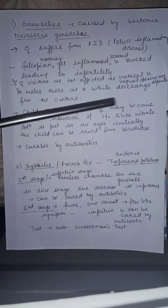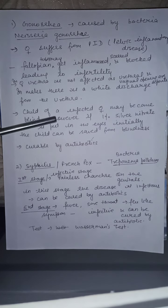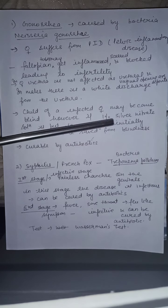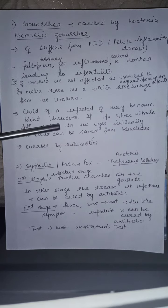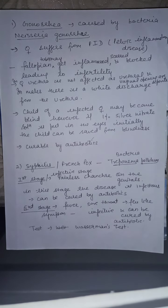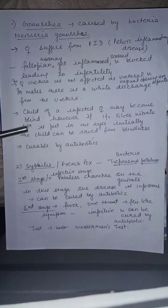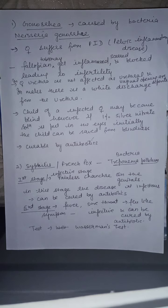A child of an infected female may become blind; however, if a 1% silver nitrate solution is put in the eyes initially, the child can be saved from blindness. Gonorrhea is curable by giving antibiotics because it is a bacterial disease.